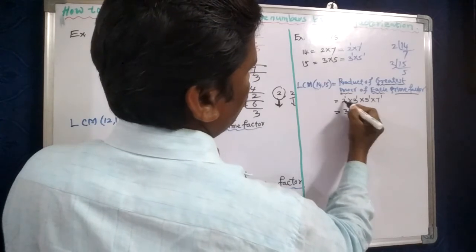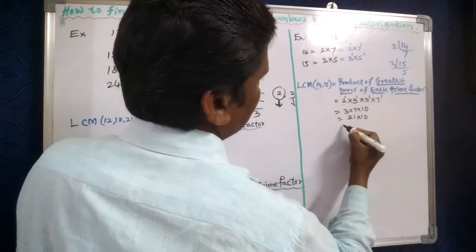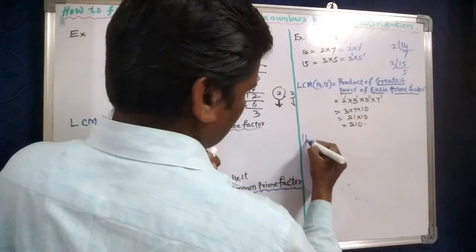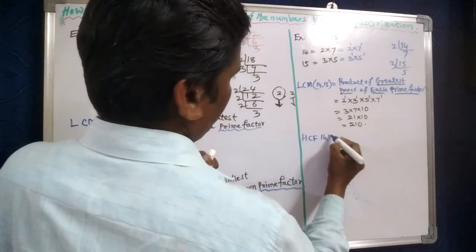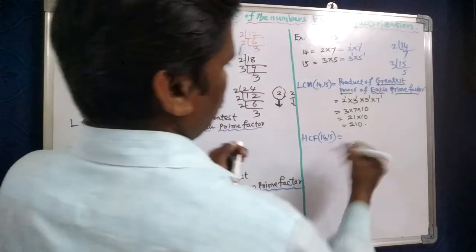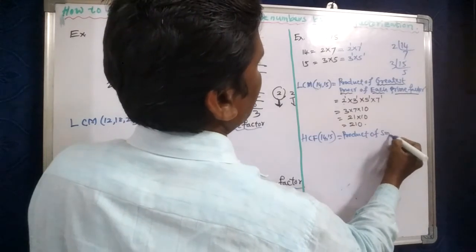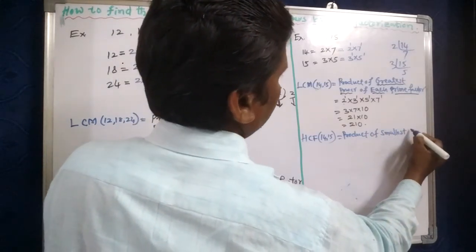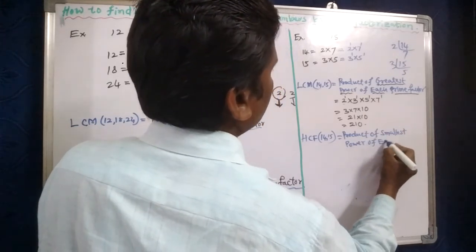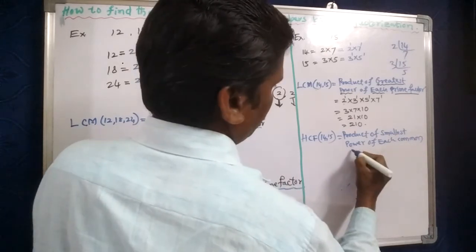So LCM is 2 into 3 into 7 into 5. That is 2 into 5 equals 10, and 3 into 7 equals 21, so 21 into 10 gives us 210. Now next, HCF of 14 and 15 is the product of the smallest power of each common prime factor.